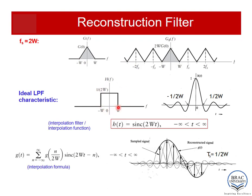We can use a low-pass filter to accomplish this. If we multiply this low-pass filter with the sampled signal in the frequency domain, we recover the original spectrum. So the reconstruction filter is a low-pass filter with a cutoff frequency of W. Multiplying this low-pass filter with the sampled signal output gives us only the original spectrum — that is our objective.